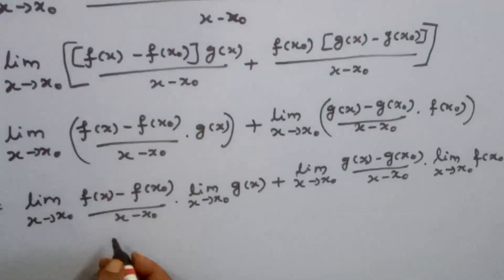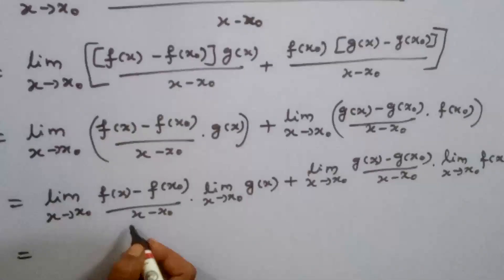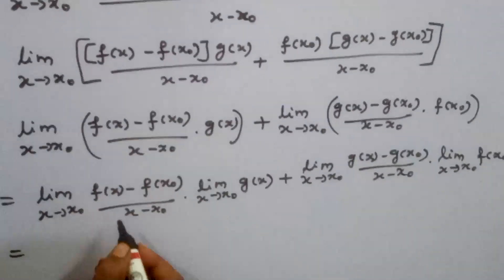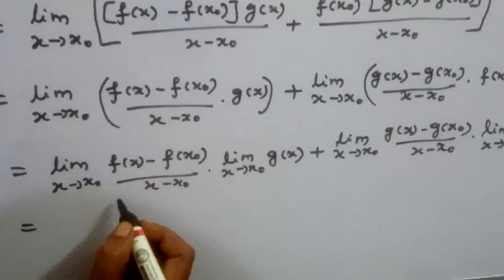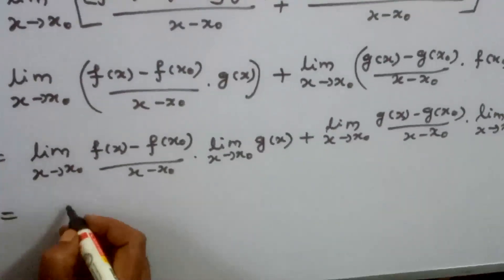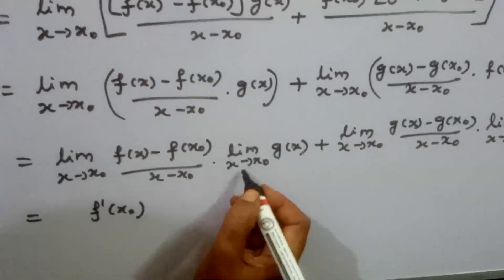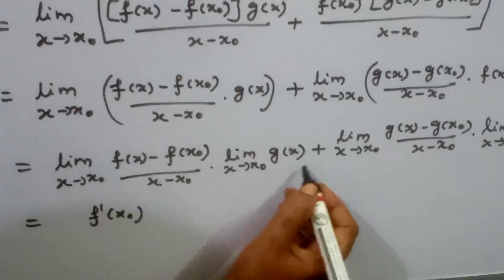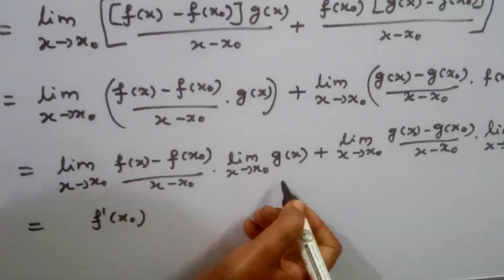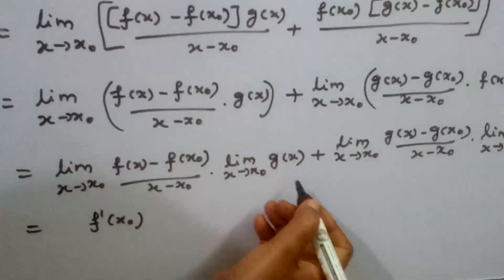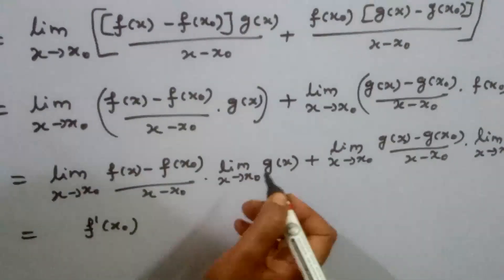Now we apply the limit values. Since f is derivable at x0, limit x tends to x0 of f of x minus f of x0 divided by x minus x0 equals f dash of x0. Similarly for g. Also, since g is derivable at x0, it is continuous at x0, so limit x tends to x0 of g of x equals g of x0.